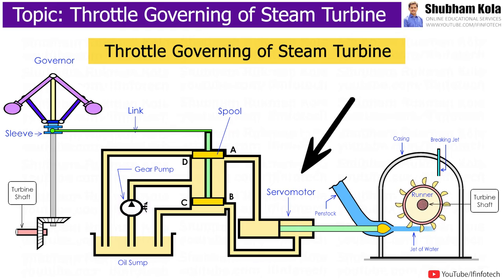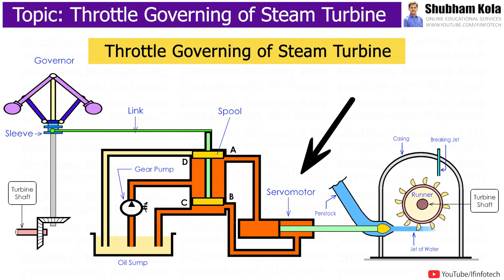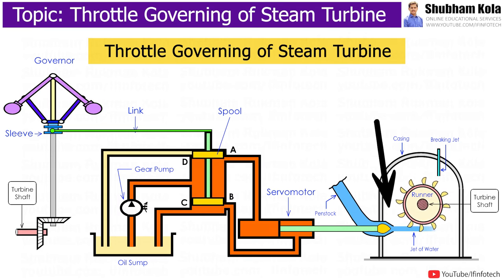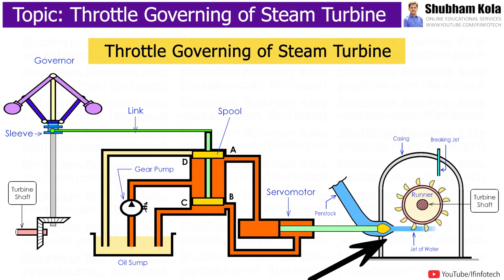By this way, oil enters inside the cylinder and pushes the piston. The movement of the piston operates the throttle valve, which in turn closes the steam ports partially, and steam pressure at the inlet to the turbine is reduced.